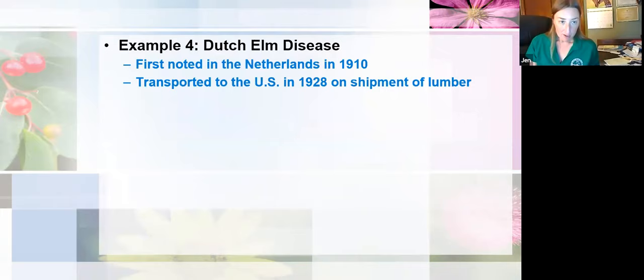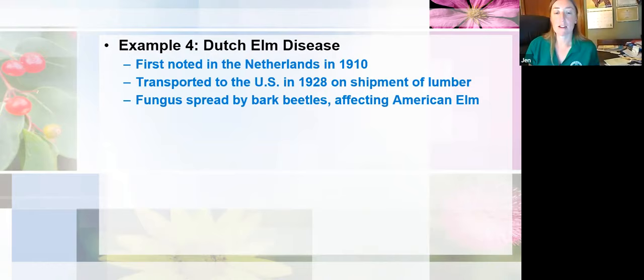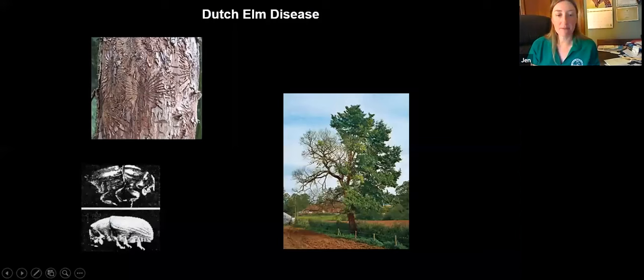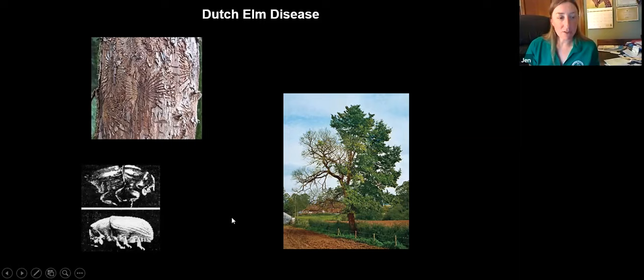Dutch elm disease was first noted in the Netherlands in 1910 and was transported to the U.S. in 1928 on a shipment of lumber. This fungus attacks our American elms and is actually spread on the backs of bark beetles. The upper branches with leaves start to wither and yellow in summer and it eventually spreads to the rest of the tree. We can see the dieback of the elm, bark beetle feeding trails under the bark, and the bark beetles themselves that carry the fungus. Occasionally we do find American elms growing just fine that are isolated and haven't been infected because the beetles haven't gotten to them.